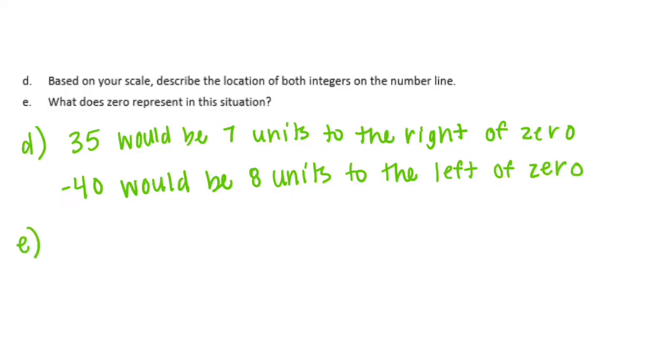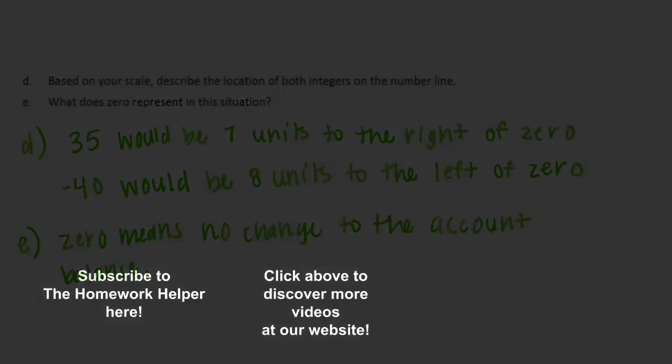E, what does 0 represent in this situation? 0 means that there's no change being made to your account balance. If you were to put in 0 dollars, nothing's changing. So 0 means no change to the account balance. If you had 5 dollars in your account and you deposited 0 or took out 0, you would still have the same amount of money.